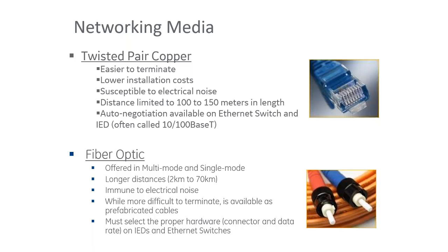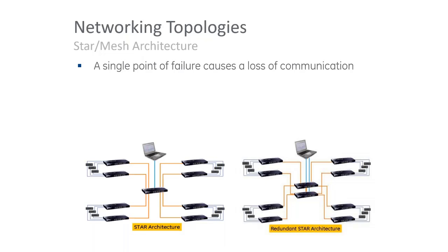When we talk about Ethernet, we also need to talk about topologies. The first is the star architecture — the most basic type, where devices connect into a switch, which then connects to a maintenance computer or SCADA system. The disadvantage is a single point of failure can cause a loss of communication. There is a way to make this redundant by creating a redundant star architecture.